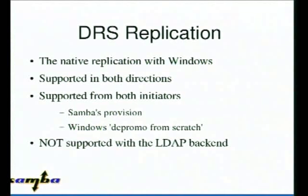Which brings us to DRS replication — the Directory Replication Service — native replication in Windows, supported in both directions and supported with Samba providing the initial seed from your existing Windows domain. When we started working on this, we only had Windows as the seed, so you could go Windows to Samba. We've worked in the last few months to the stage where we now have Samba to Windows, and it fully accepts that we can actually start an Active Directory forest with the information we have in our source tree.